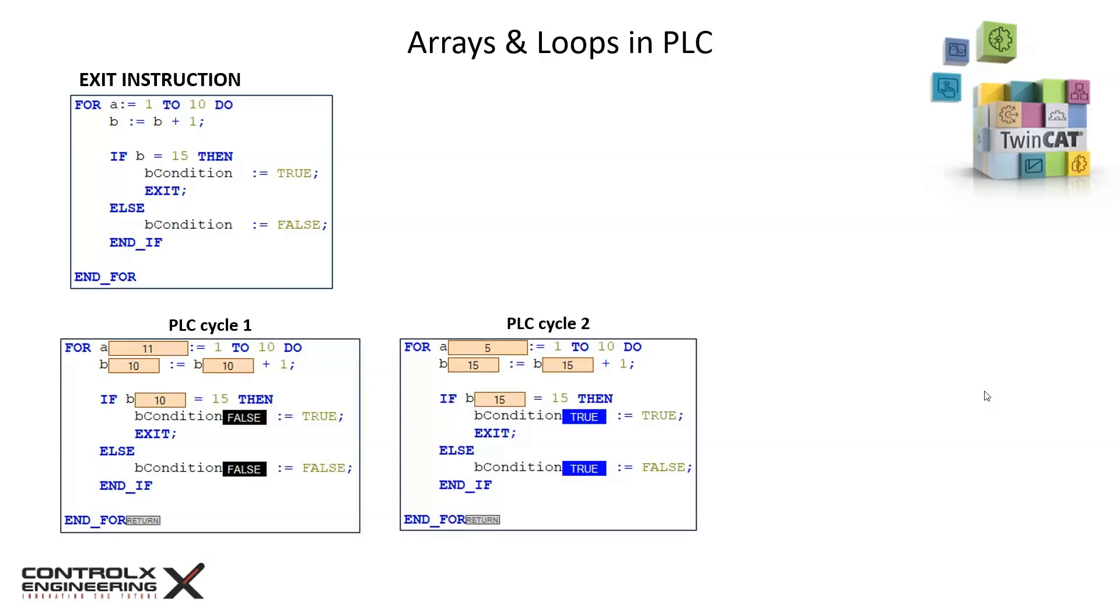At the end of the second cycle, b increments one at a time, but when it reaches a value of 15 it is caught by the if statement which sets the boolean variable to true and exits the loop. Note that the for loop only incremented five times and had to exit.